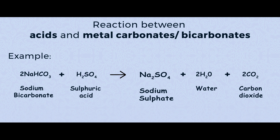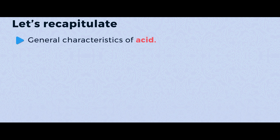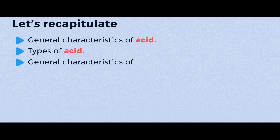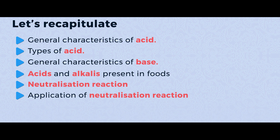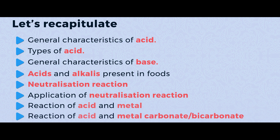With this we come to the end of our lesson. Let's recapitulate. Today we learnt about the general characteristics of acid, types of acid, general characteristics of base, acids and alkalis present in foods, neutralization reaction and its applications, and the reaction of acid with metal.